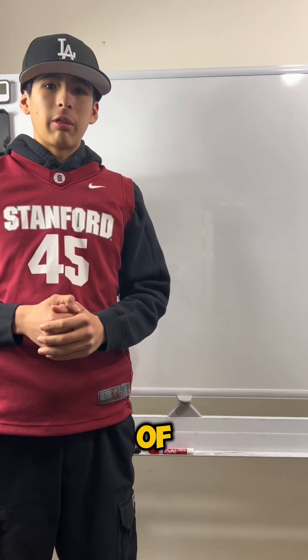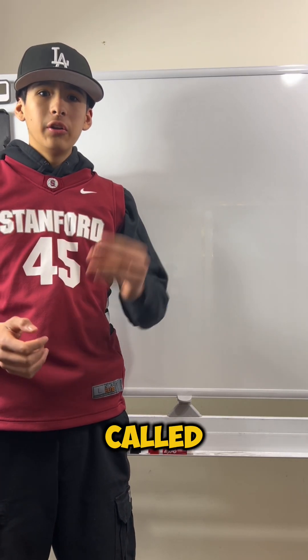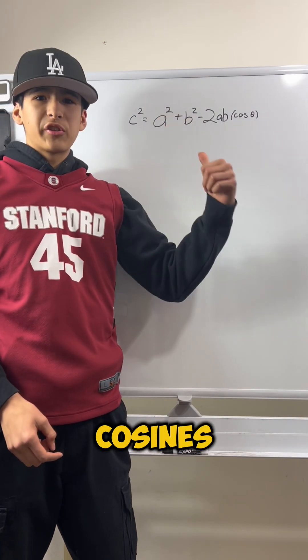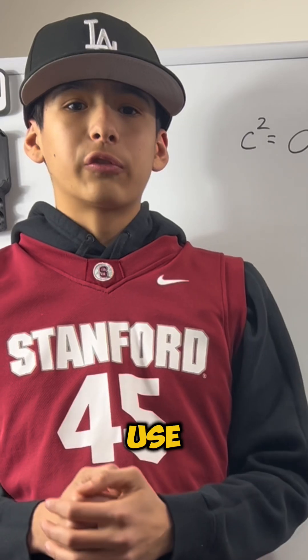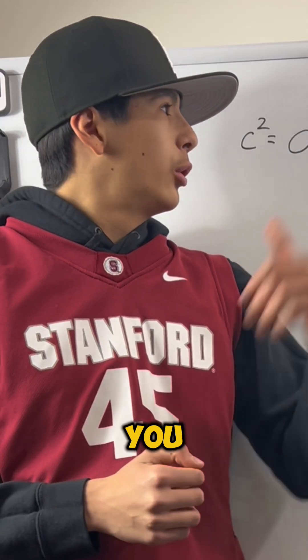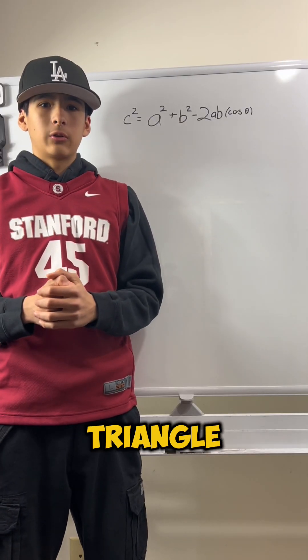But there's a better version of the Pythagorean theorem and it's called the law of cosines. And unlike the Pythagorean theorem, which you could only use for right angled triangles, you could use this for any angled triangle.